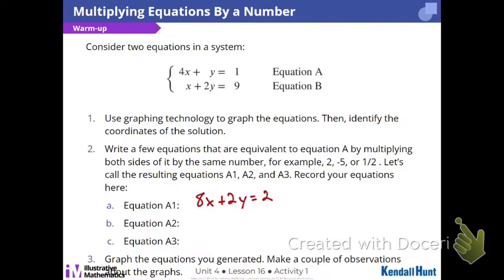Wait, oh, never mind. I did not do it by negative 5. Well, just do it with me real quick then. So 4x times negative 5? Negative 20x. Okay, y times negative 5? Negative 5y. And then 1 times negative 5? There we go.